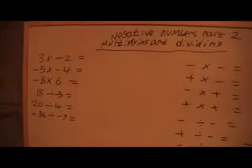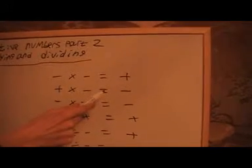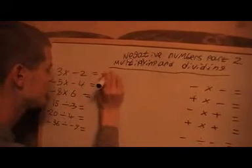I want to do three examples on how we multiply numbers. We've got 3 times minus 2. We know that 3 times 2 is 6. But if we look at the rules, we've got a plus times a minus, and it says that's a minus. So 3 times minus 2 is minus 6.